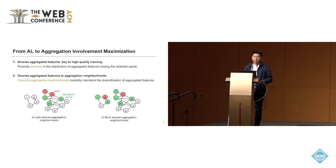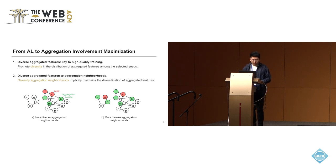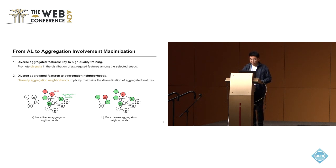Although GNNs differ in how they aggregate features from neighborhoods, they all require training transformation matrices whose quality depends on the diversity of the selected seeds. To ensure compatibility with various GNNs — even if we don't know the specific GNN during seed selection — we diversify the aggregation neighborhoods, which implicitly maintains diversification of aggregated features. For example, selecting nodes C and G is better than F and C because the aggregation neighborhoods are more diverse, and hence the aggregated features are also diverse regardless of which GNN is used in the downstream task.